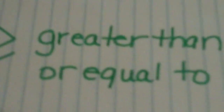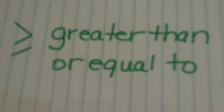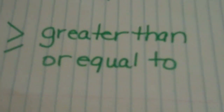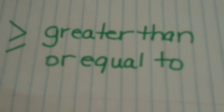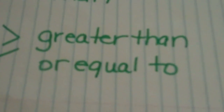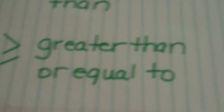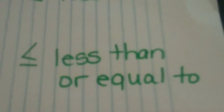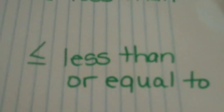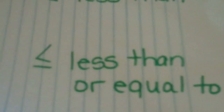We're going to also be using greater than or equal to. You see that there's a line underneath that greater than sign — that means that it could also be equal to the solution, but it's also greater than. And then we also can use less than or equal to, which also has the line underneath. So let's look at a sample problem that I started working on here for you.